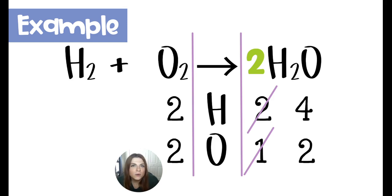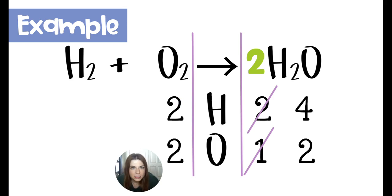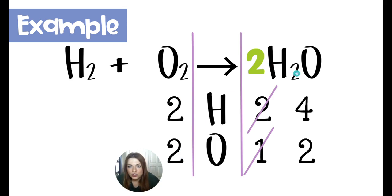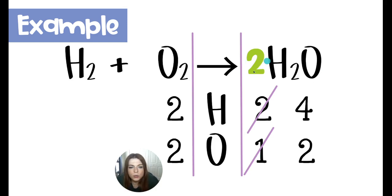So we started out with our chemical equation: H2 plus O2 yields H2O. I have my vertical lines and I've listed my elements. I've counted two hydrogens on my reactant side and two oxygens on my reactant side. And initially I had two hydrogens on the product side and only one oxygen on the product side.